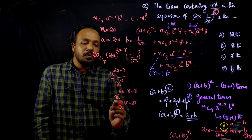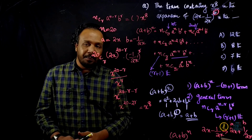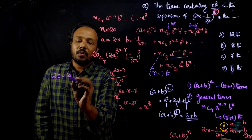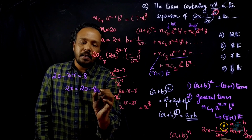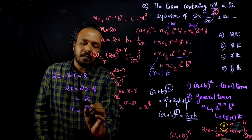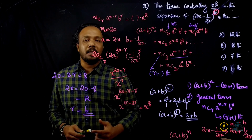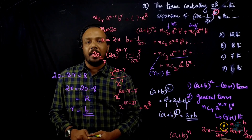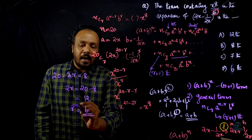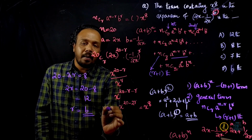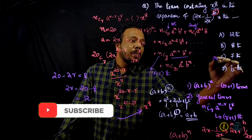Comparing the power of x, we set 20 minus 2r equal to 8. Solving: 2r = 12, so r = 6. Since the general term is the (r+1)th term, and r = 6, the required term is the 7th term. Option C — the 7th term — is the answer.